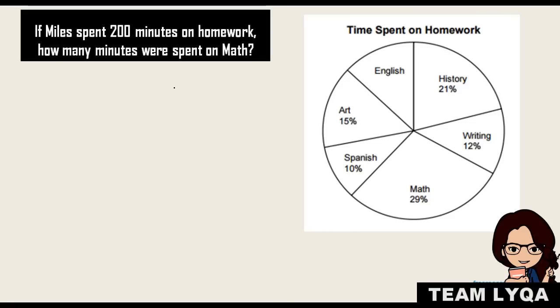If Miles spent 200 minutes on homework, how many minutes were spent on math? So since you have 200 minutes, and this is the total she spent on homework, and 29% was used for math, what you need to do is multiply it. So 200 times 0.29, that will be the answer. There are a number of techniques you can use. You can multiply it outright: 200 times 0.29. So move it 1, 2, 2 decimal places, so move this 1, 2. So the answer would be 29 times 2, or 50, 8. So 58 minutes is what she spent solving math.